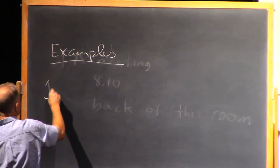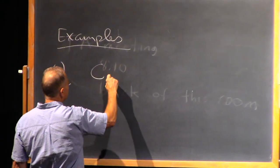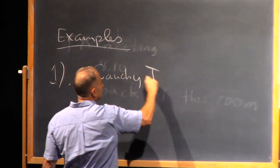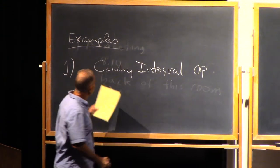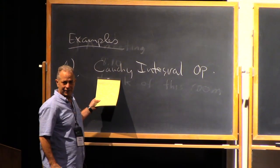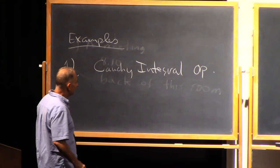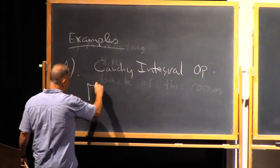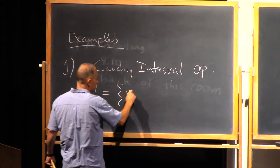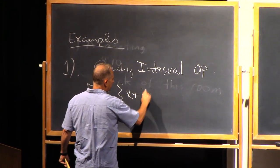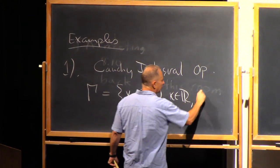So first, let me start with some examples. The first example, a fundamental example, is the Cauchy integral on a Lipschitz curve. Can everyone see even in the back? So the Cauchy integral is defined as follows. We're going to have a curve gamma, which is going to be a Lipschitz curve in the complex plane. It'll be the set of X plus iA(X), X on the line, and A is Lipschitz.